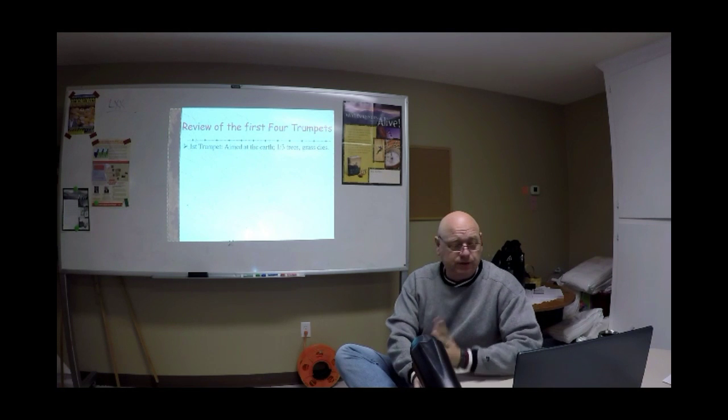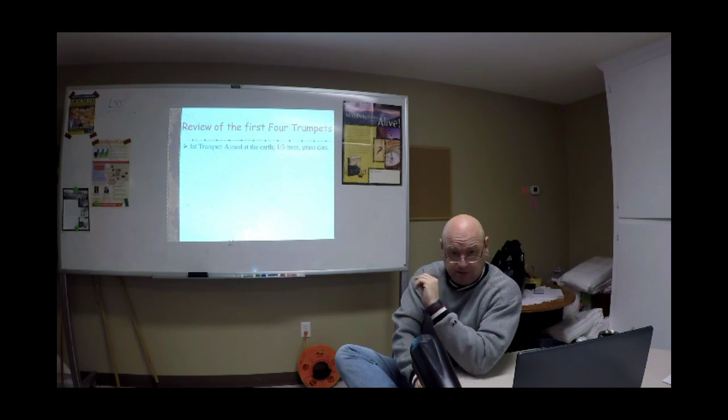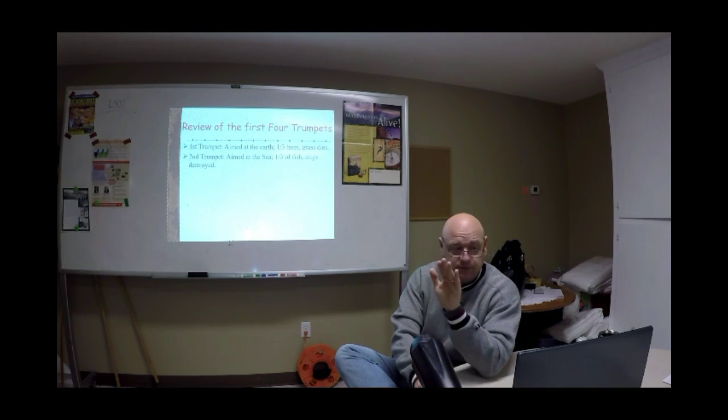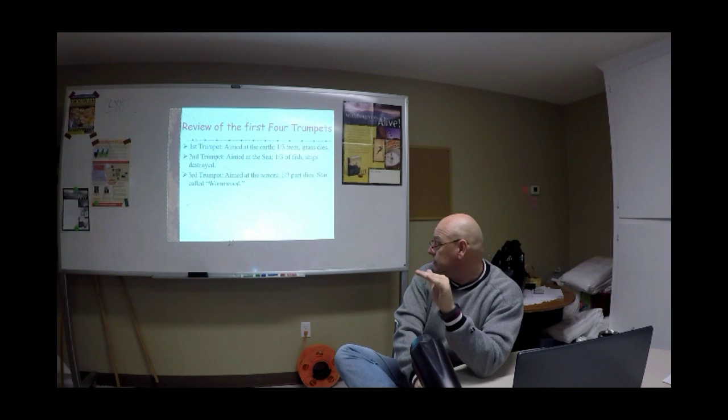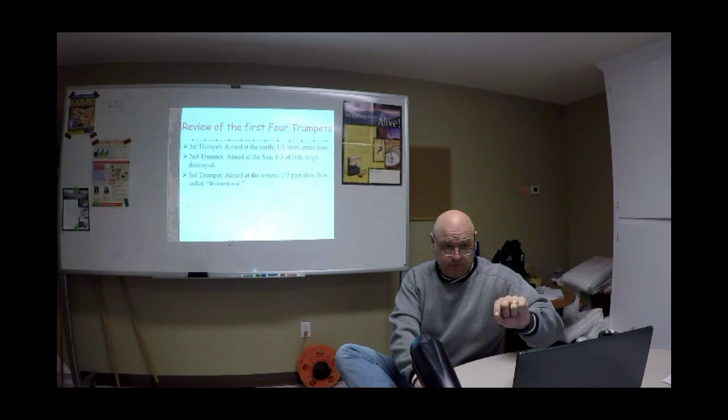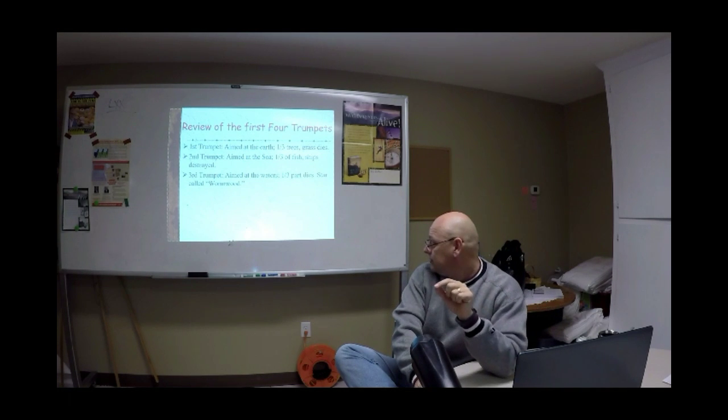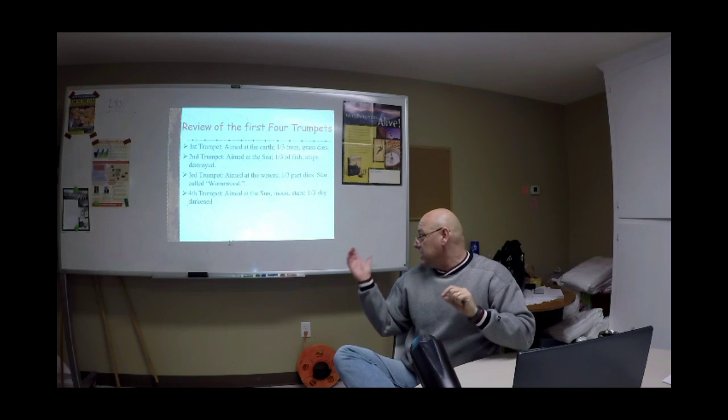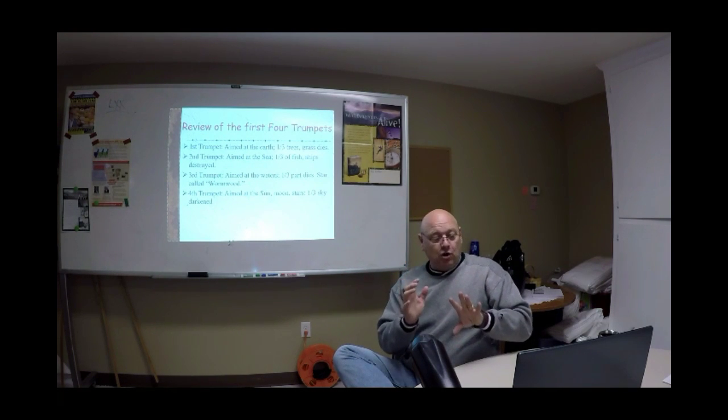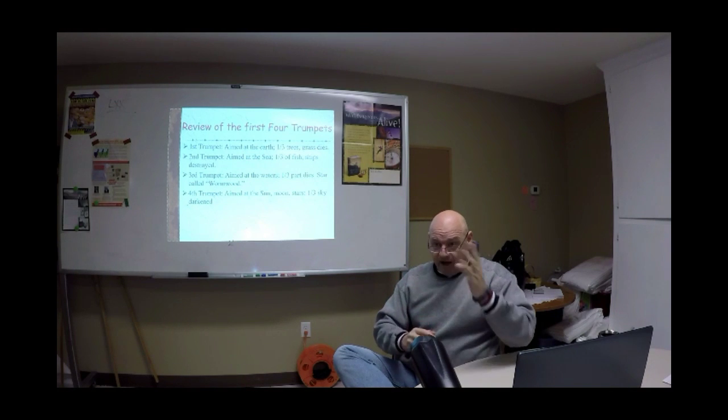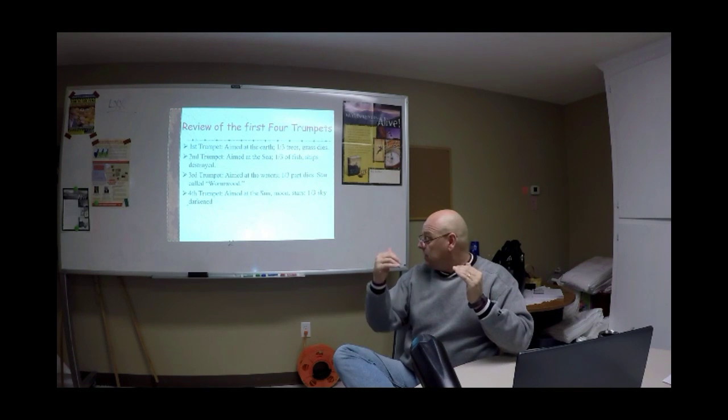So, first trumpet, just a little review. First trumpet is aimed at the earth, burns up a third of the trees and the grass. The second trumpet is aimed at the sea. A third of the fish and the ships are destroyed. The third trumpet is aimed at the waters, the fresh waters. And that's where a third part of the freshwater systems died. And that's where we see the star called Wormwood. What was the Ukrainian name for Wormwood? Chernobyl.